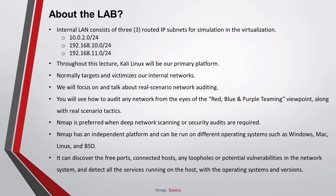We have an internal LAN consisting of three routed IP subnets for simulation in the virtualization: 10.0.2.0/24, 192.168.10.0/24, and 192.168.11.0/24. Throughout this lecture, Kali Linux will be our primary platform for auditing. We normally target and work within our internal network. We will focus on real scenario network auditing tactics and you will see how to audit any network from the eyes of red, blue and purple teaming viewpoints.